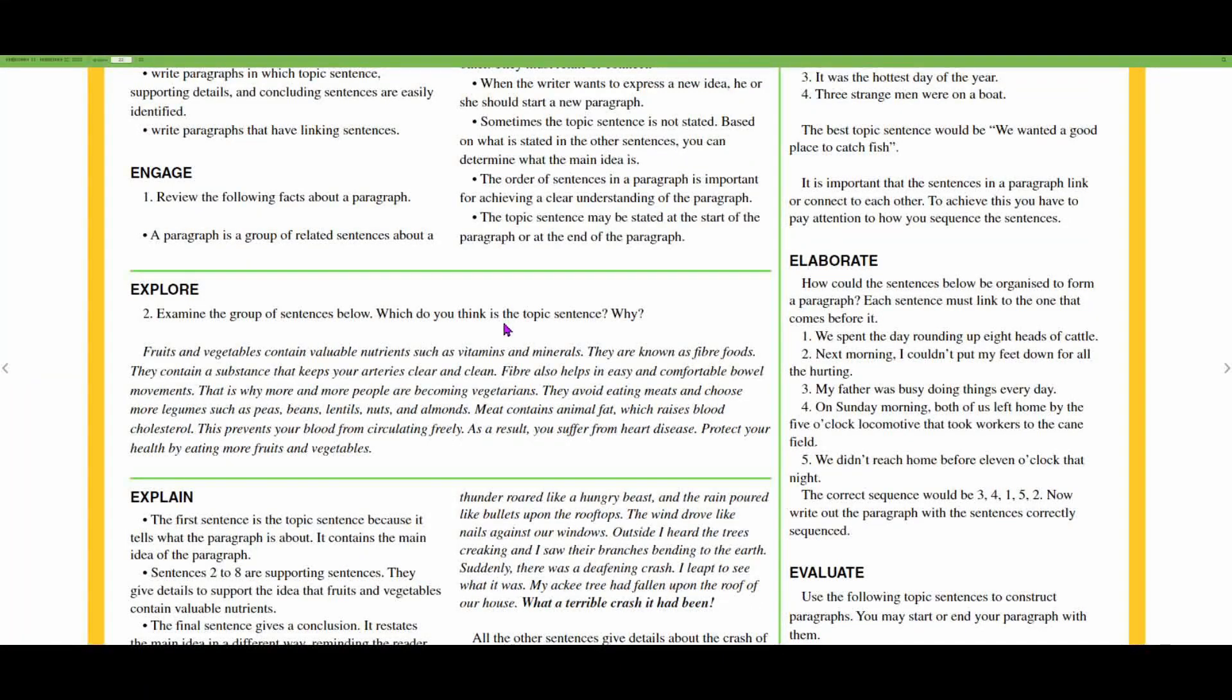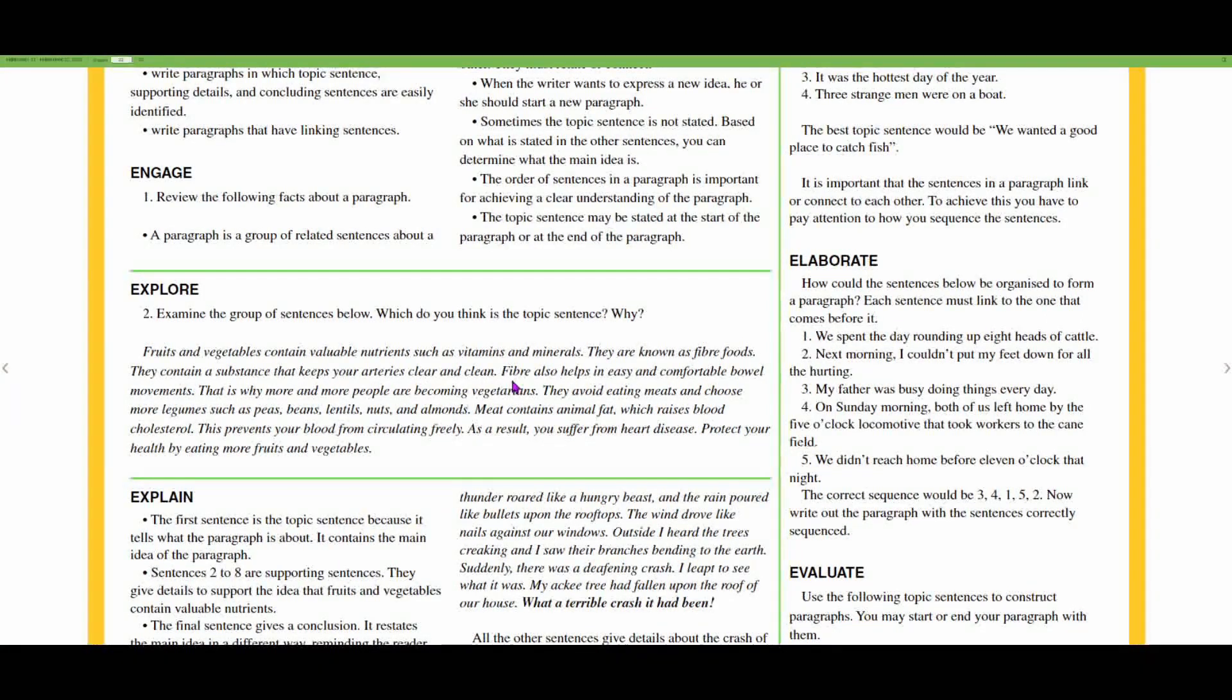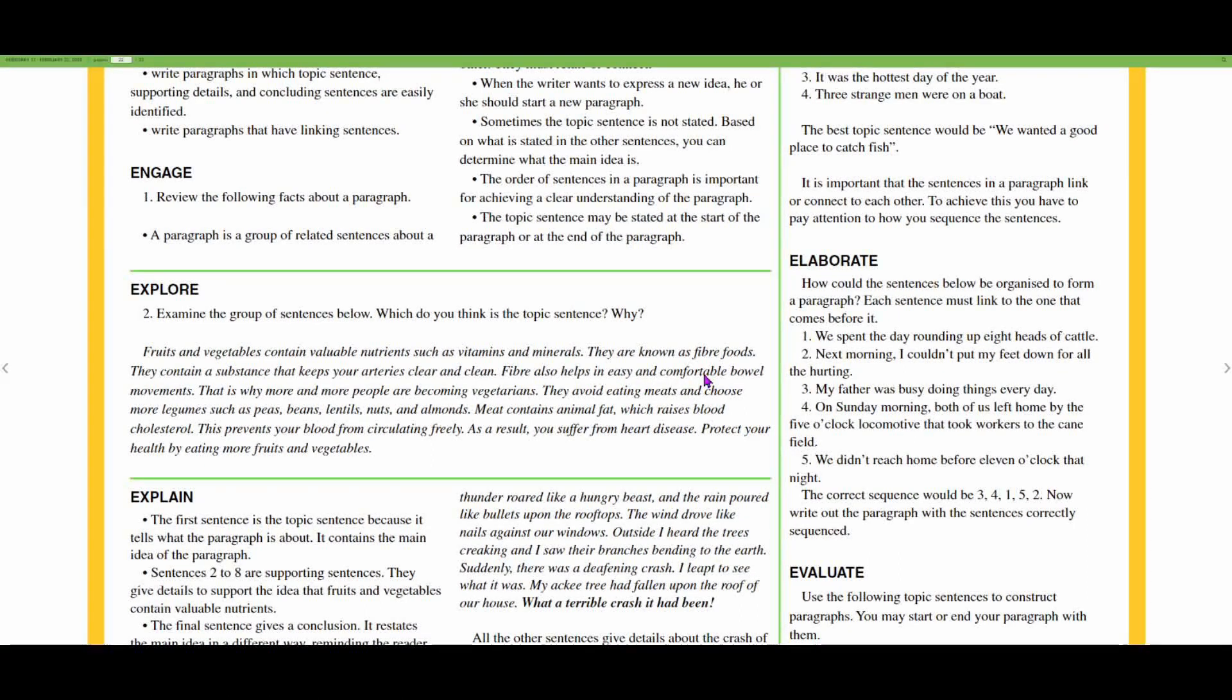Explore. Examine the group of sentences below. What do you think the topic sentence is and why? Fruits and vegetables contain valuable nutrients such as vitamins and minerals. They are known as fiber foods. They contain a substance that keeps your arteries clear and clean.